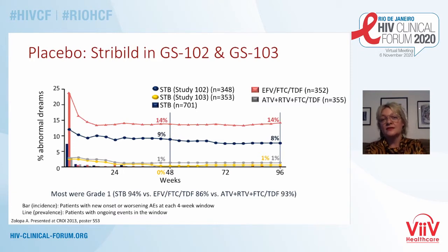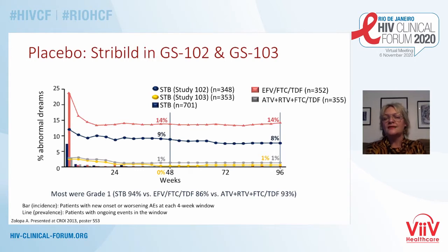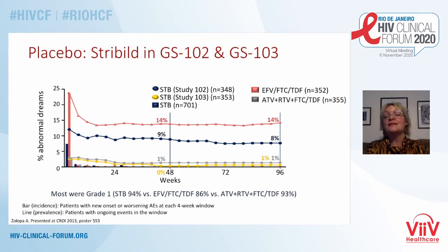This is a great way of showing adverse events — we can counsel patients when they're starting treatment. The top red line shows abnormal dreams in people on efavirenz, then STRIBILD, then the grey line for atazanavir, and the yellow line also for STRIBILD. You see a big difference in STRIBILD abnormal dreams rates between the two studies. In 102, where abnormal dreams were more common on STRIBILD because it was a blinded study, people knew they might be on efavirenz. In 103, where people weren't expecting abnormal dreams, the rates were much lower — a really good demonstration of the impact of placebo.